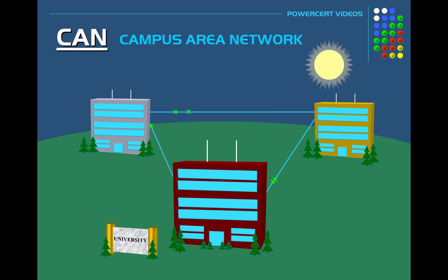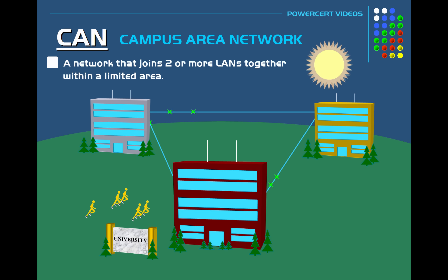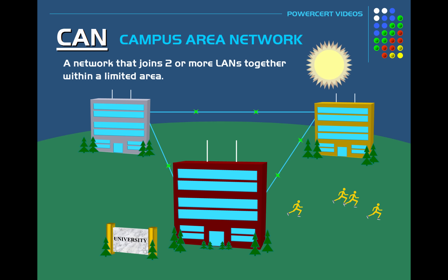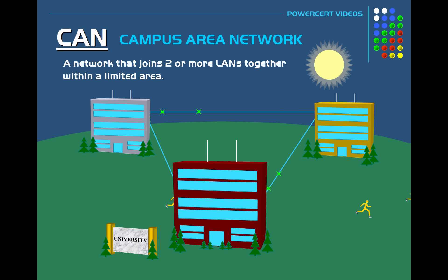The next network type is a CAN. CAN stands for Campus Area Network. A CAN is a network that joins two or more LANs together within a limited area. For example, a CAN could be a university that has multiple buildings in the same general area that are connected to each other to form a larger network. These buildings could be different departments on a university's property, each building having their own LAN, and then the buildings are connected to form a campus area network.